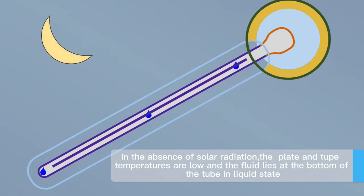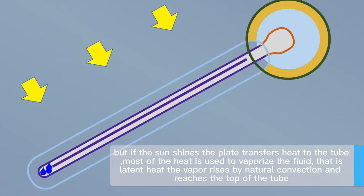In the absence of solar radiation, the plate and tube temperatures are low and the fluid lies at the bottom of the tube in liquid state.